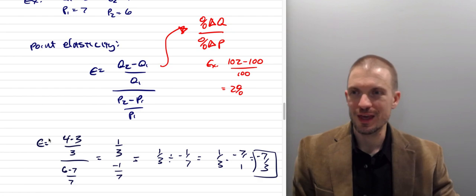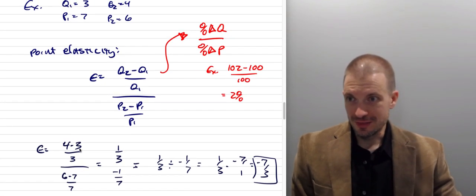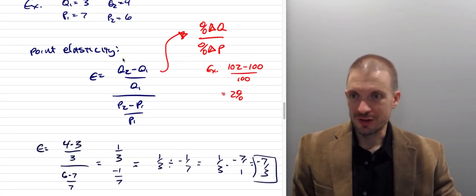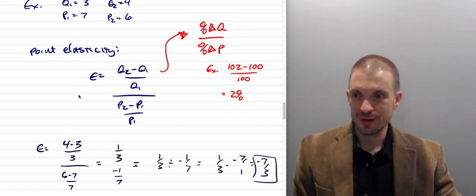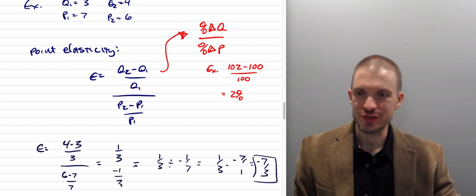We can plug in. Let's see if I can make this so we can see everything at once. All right, let's plug in Q2, 4 minus Q1, 3 divided by 3. That's going to be 1 divided by 3. That's 1 third. And then P2, 6 minus P1, 7 divided by 7 is going to be minus 1 seventh.